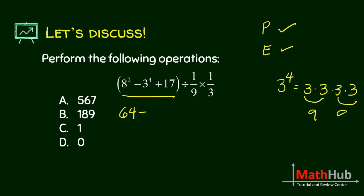64 minus 81 is negative 17, and then you add 17. Different signs, so you subtract. 17 minus 17, you get 0.